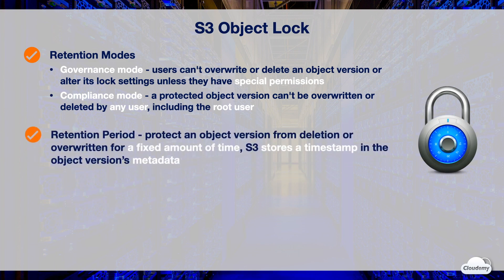A retention period protects an object version for a fixed amount of time. When you place a retention period on an object version, S3 stores a timestamp in the object version's metadata to indicate when the retention period expires. After the retention period expires, the object version can be overwritten or deleted, unless you also placed a legal hold on the object version.